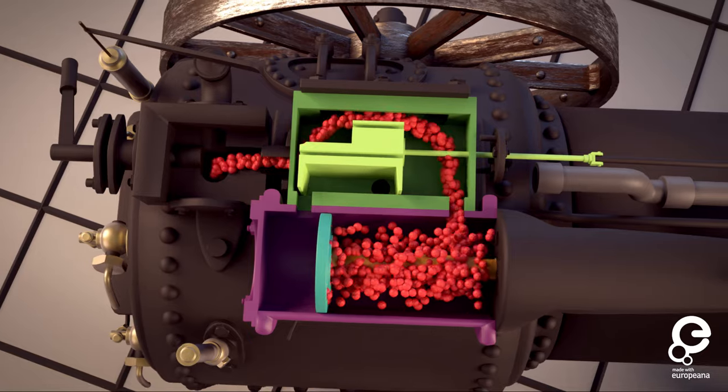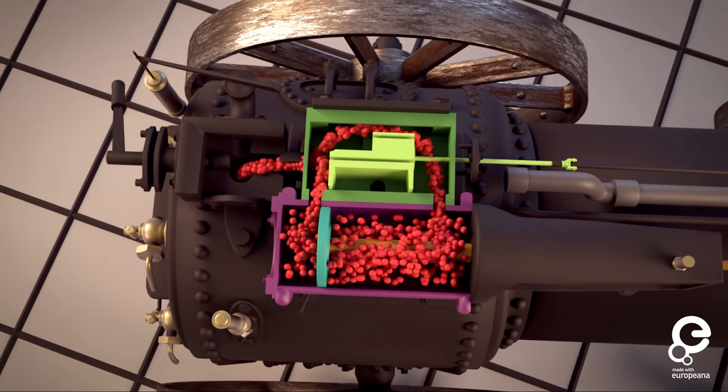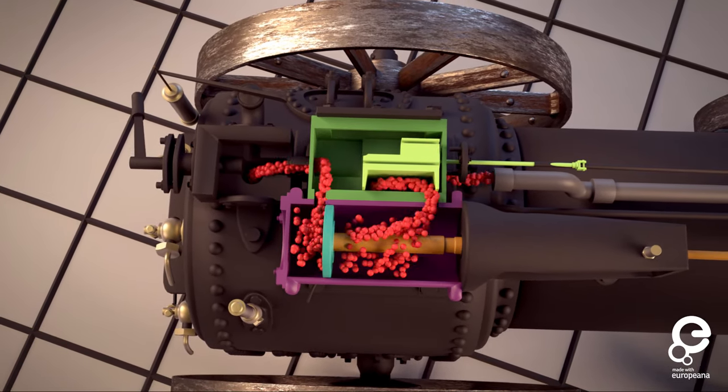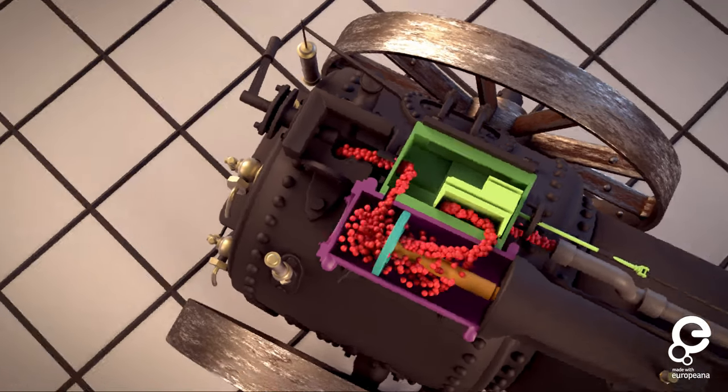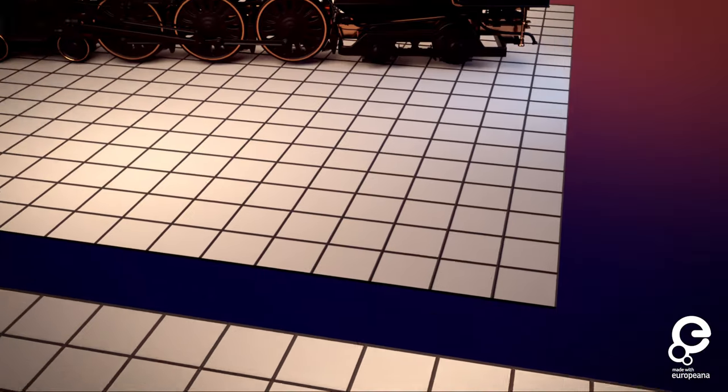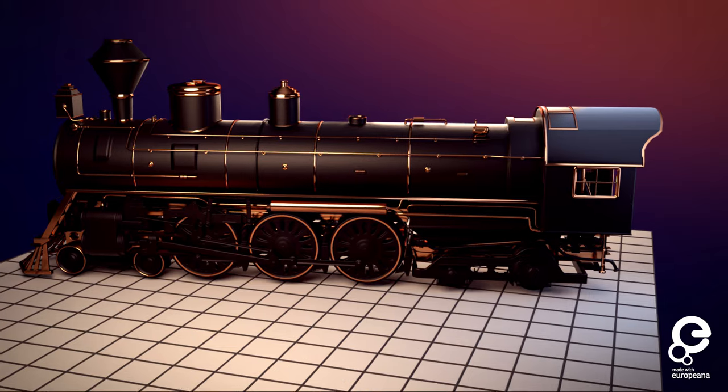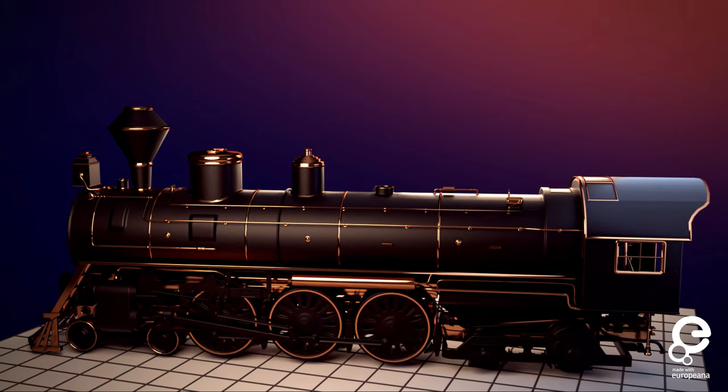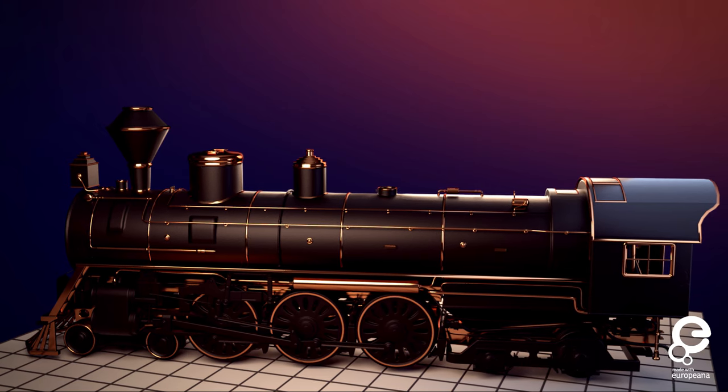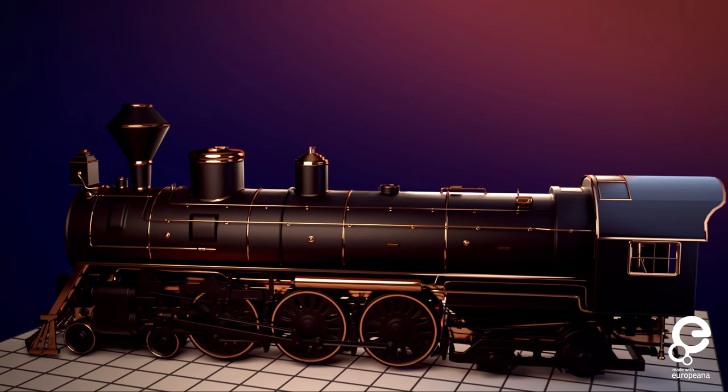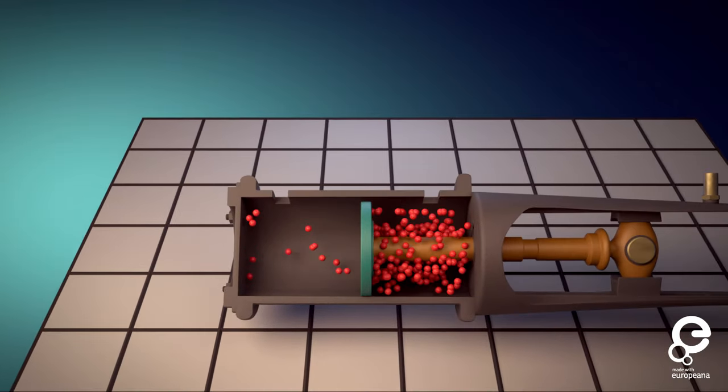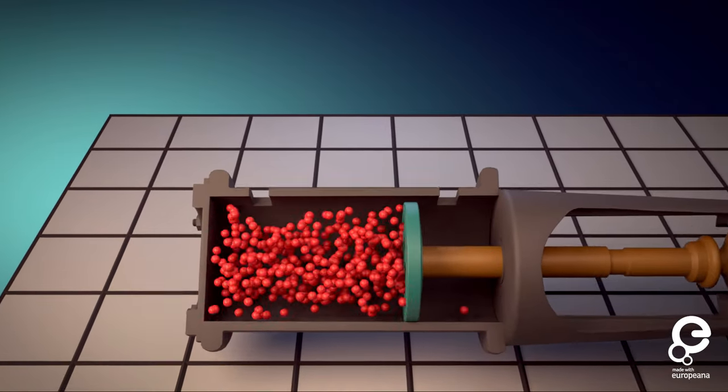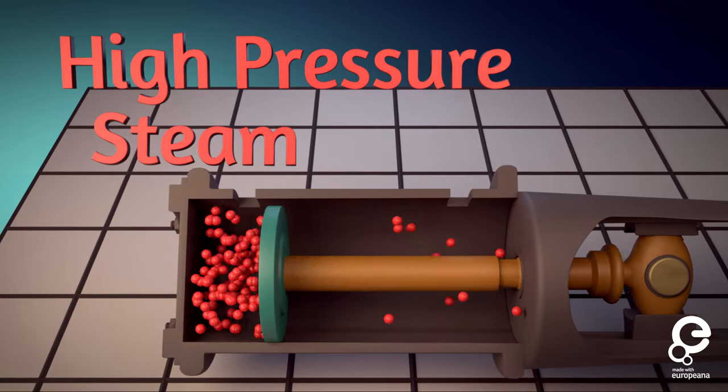This is the basic idea behind how traction and locomotive steam engines convert energy from fire into moving a wheel. But you may be thinking to yourself, a train is massive. How could this steam possibly have enough force to move an entire locomotive and dozens of cars? Well, to answer that question, let's explore the concept of high pressure steam.